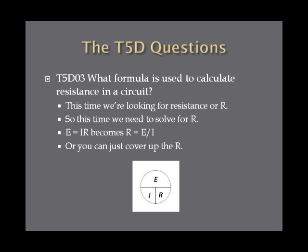What formula is used to calculate resistance in a circuit? This time we're looking for resistance, or R, in the E equals IR equation for Ohm's Law. So we need to solve for R. If you cover up the R in the decision circle, E equals IR becomes R equals E over I. So resistance in ohms is equal to voltage in volts divided by current in amperes.